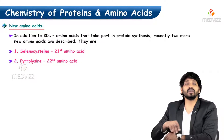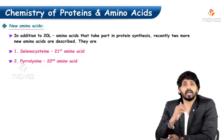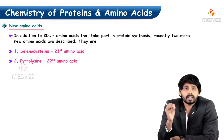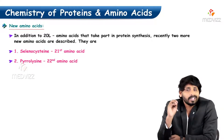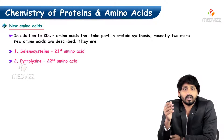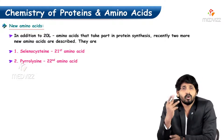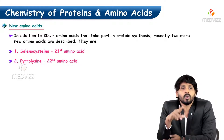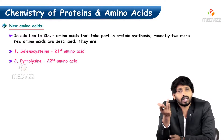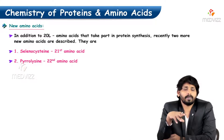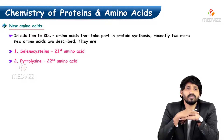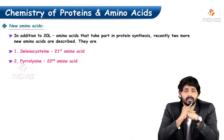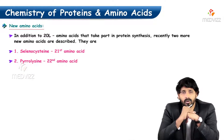Regarding new amino acids and recent discoveries: so far we studied that only 20 amino acids are present in our protein structure, but recent research has identified two more new amino acids in protein structures. These are selenocysteine and pyrrolysine. Pyrrolysine is a modified form of lysine. These may come up in viva questions.